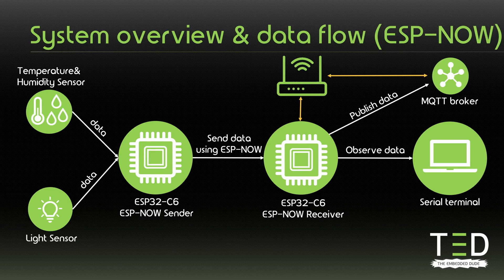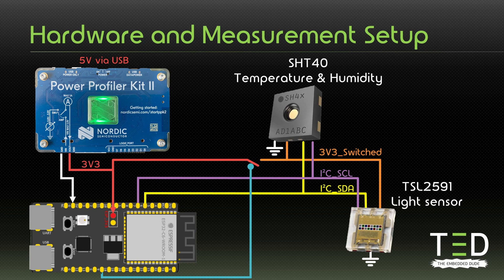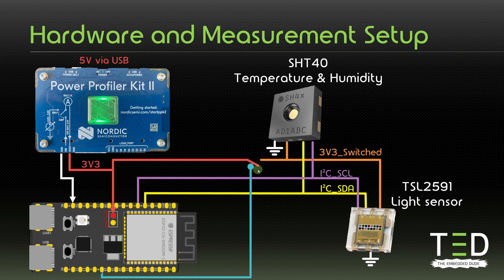Next, let's have a quick look at the hardware and measuring setup. The hardware and measurement setup remains unchanged from the previous video to ensure we can compare the measurement results. One important note: to get the same results with the ESP32C6 DevKit, it is important to connect the 3.3V as shown in the picture to ensure that only the Vroom module gets powered and not the rest of the board. Another important part is the power switch to turn the power to the sensors on and off to ensure they are powered off during sleep times. I'm using two MOSFETs to do that. Next, let's have a look at the software state machine that was slightly changed to also handle ESPNOW.